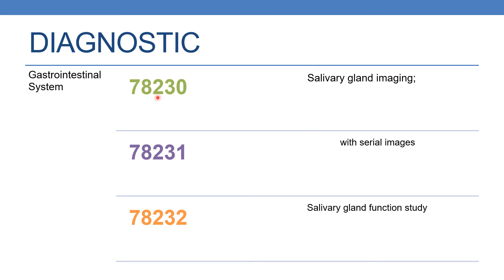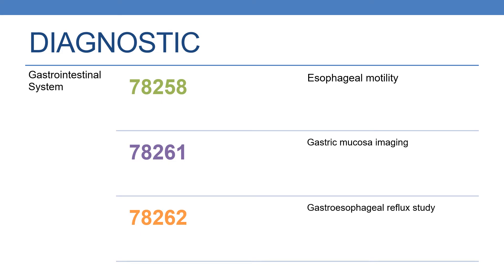The next code is 78236, which deals with salivary gland imaging. The next is 78231, which deals with salivary gland imaging with serial images. The next is 78232, which deals with salivary gland functional study. The next code is 78258, which deals with esophageal motility study. The next is 78261, which deals with gastric mucosa imaging. The next is 78262, which deals with gastroesophageal reflux study.